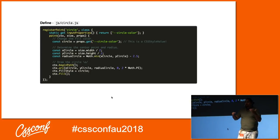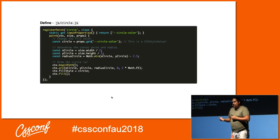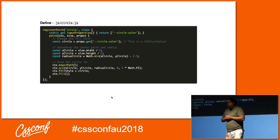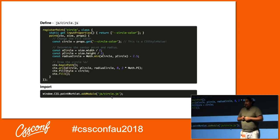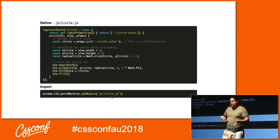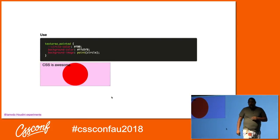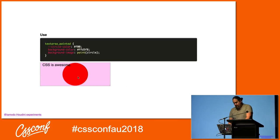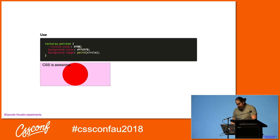Let's actually write one. Here is a simple paint worklet. We register a paint called 'circle' and bring in the circleColor custom property. We get that, set the circleColor custom property as the fill color, do a little math to draw a circle in the center, and then draw it with our context. Then window.CSS.paintWorklet.addModule('js/circle.js'). What we get is a circle painted in the center of our box — we can make it larger or smaller, it grows and shrinks. Because we're using custom properties, I can change the color of that circle by changing that custom property.